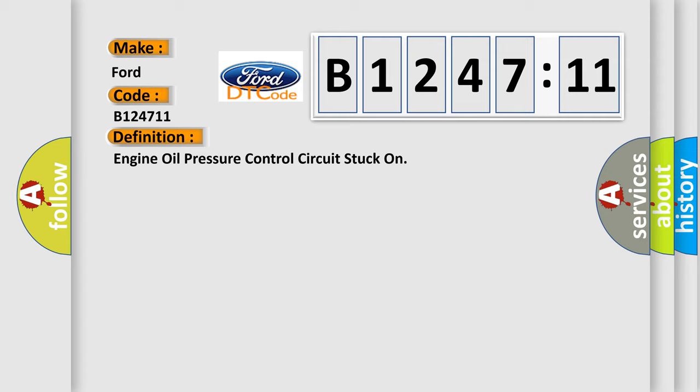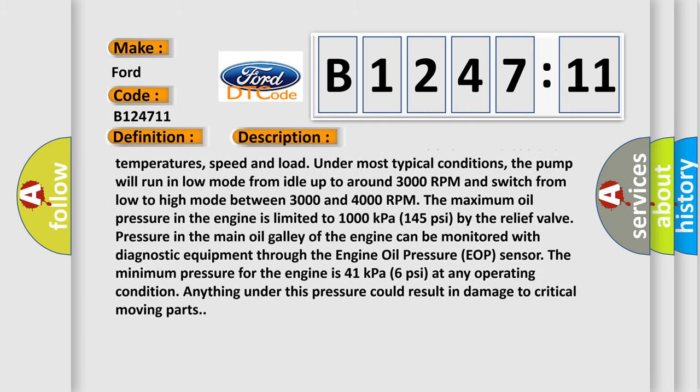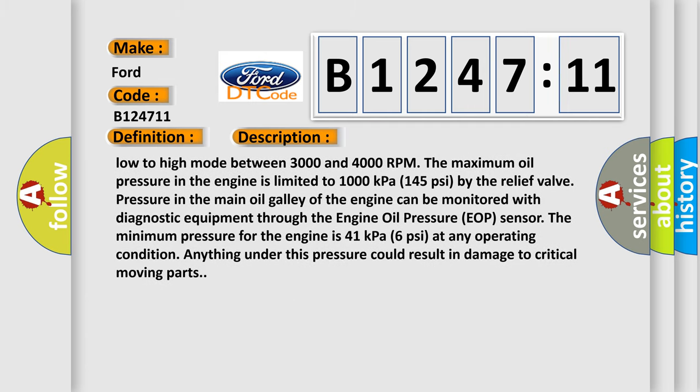Under most typical conditions, the pump will run in low mode from idle up to around 3000 RPM, and switch from low to high mode between 3000 and 4000 RPM. Low pressure mode (solenoid on) is approximately 200 kPa (29 psi) and high pressure mode (solenoid off) is approximately 450 kPa (65 psi). The maximum oil pressure is limited to 1000 kPa (145 psi) by the relief valve. Oil pressure in the main gallery can be monitored via the engine oil pressure (EOP) sensor. The minimum pressure is 41 kPa (6 psi); anything under this could result in damage to critical moving parts.